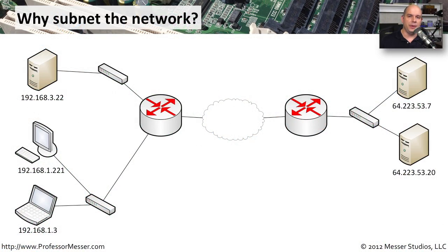When you first start getting into IP subnetting, one of the questions that comes up is why do we even have to go through this process at all? There's a lot of math involved — we have to deal with converting between binary and decimal and back again. It seems to be a very complex process, but the reality is we need to subnet because of the complexities involved if we don't.